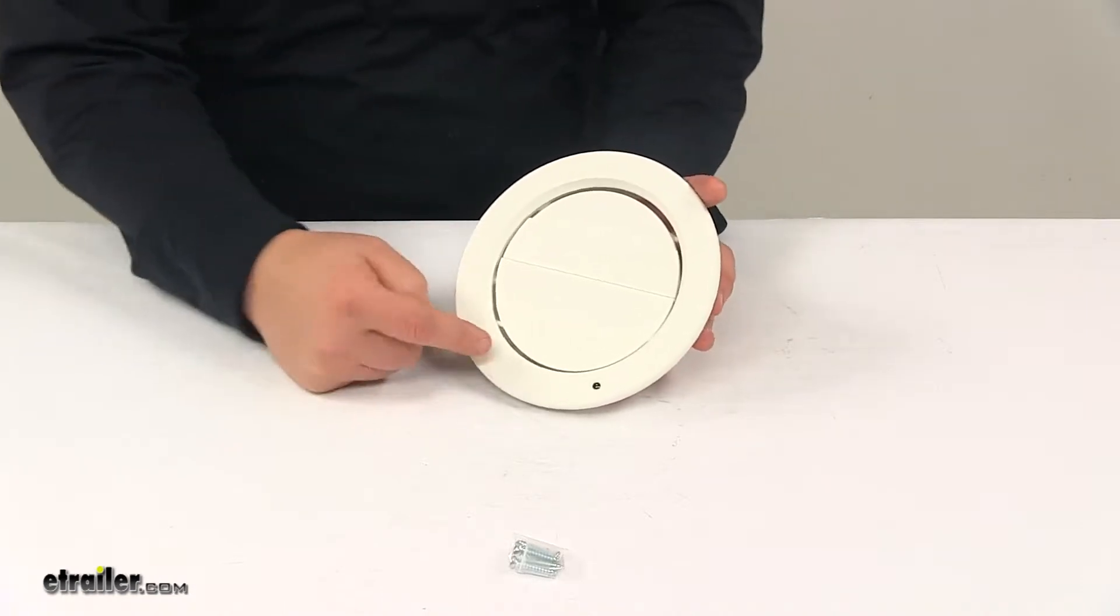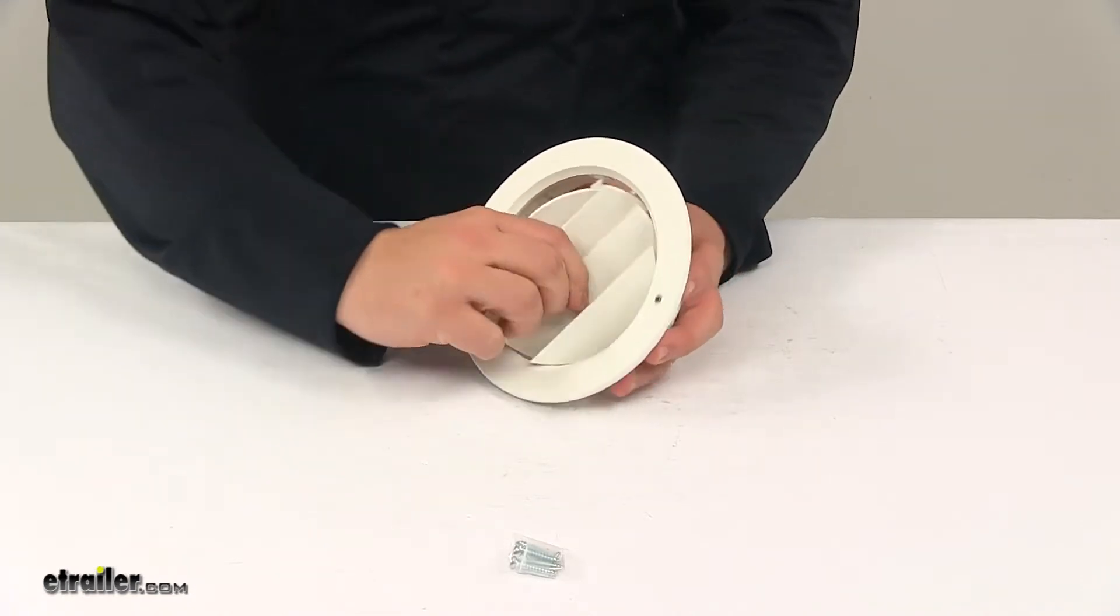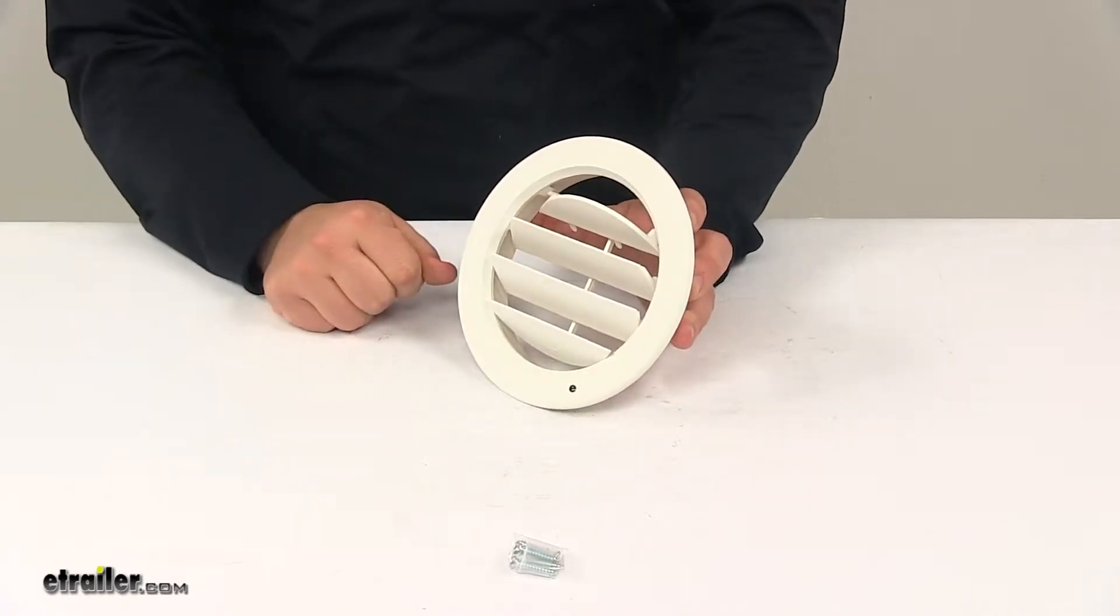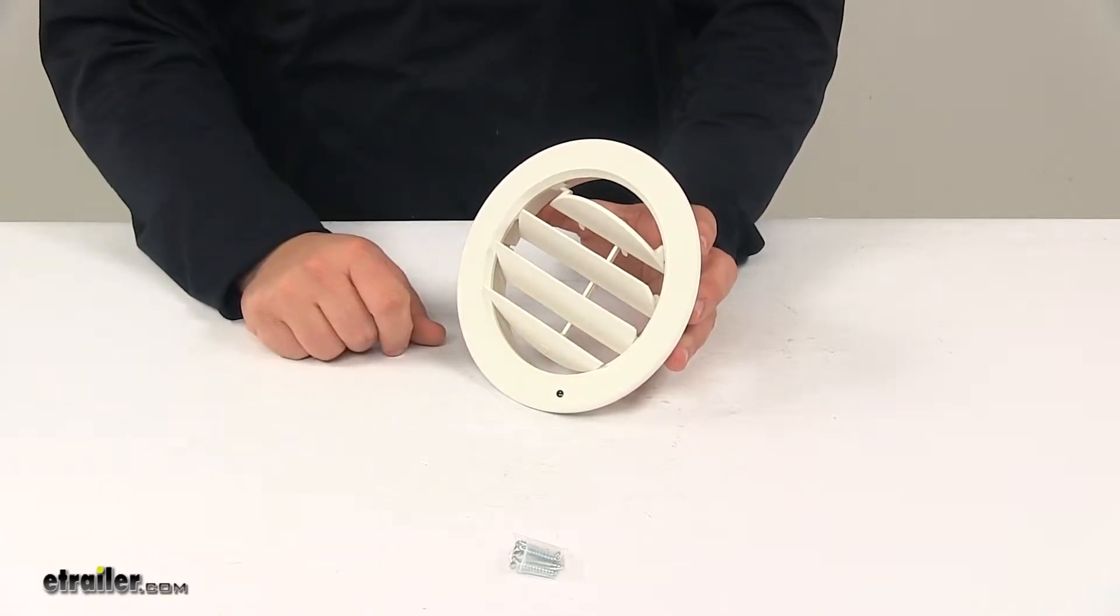To open it up, all you have to do is press on that portion there. It's rotatable 360 degrees, which allows you to direct the air to where you want it to blow.